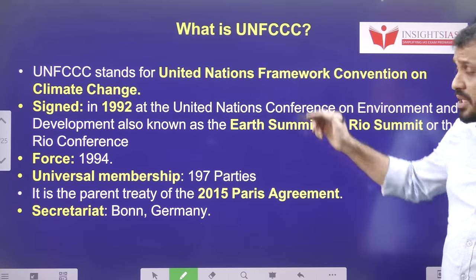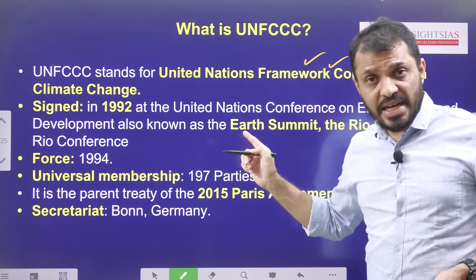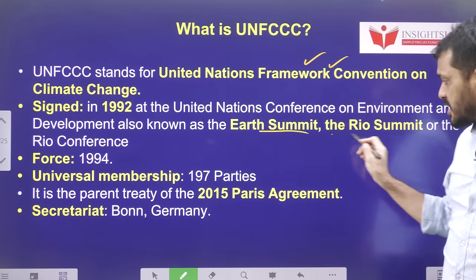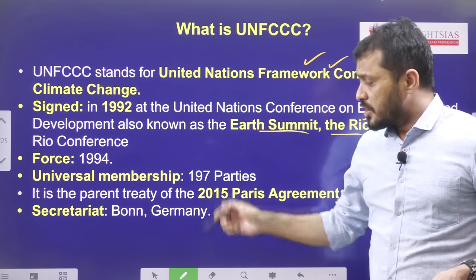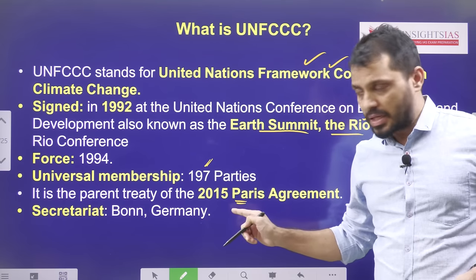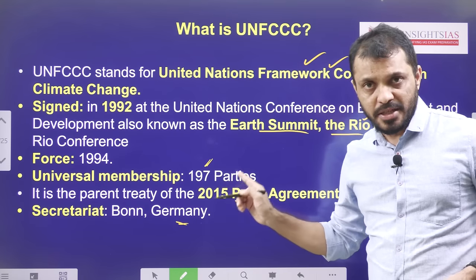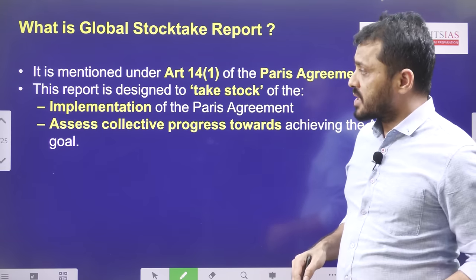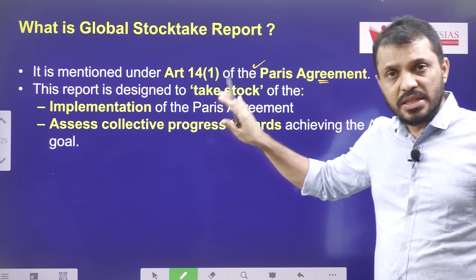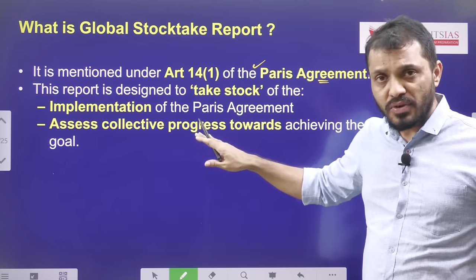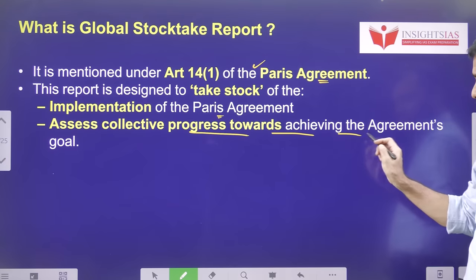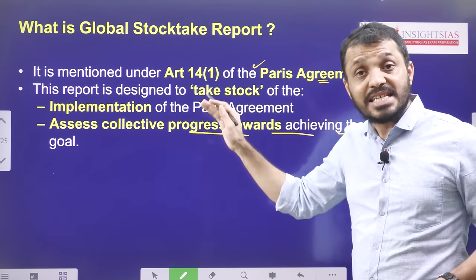UNFCCC stands for United Nations Framework Convention on Climate Change. It was signed in 1992 and came into force in 1994, signed at the Earth Summit in Rio, also known as the Rio Summit. It has universal membership of 197 countries. It is the parent treaty of the 2015 Paris Climate Agreement, and its secretariat is located in Bonn, Germany. The Global Stock Take was mentioned in Article 14, Clause 1 of the Paris Climate Agreement, designed to assess collective progress towards Paris Agreement goals.